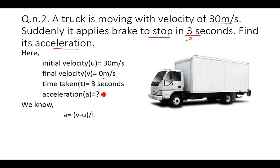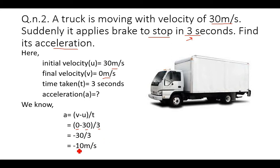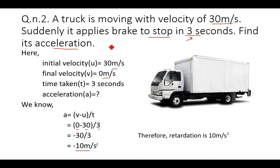Using the same formula, acceleration = (v − u) / t = (0 − 30) / 3 = −30 / 3 = −10 meters per second squared. Since negative acceleration is retardation, we can say the retardation is 10 meters per second squared and the acceleration is −10 meters per second squared.